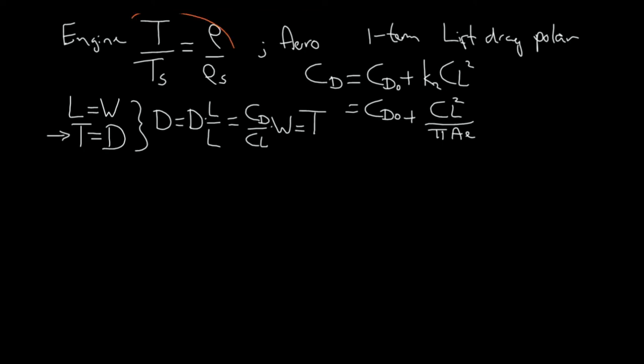And this must equal thrust according to our horizontal equilibrium. Now, I am going to take this equation here and take this thrust and replace it in the equation we already derived. So what this means is that I can also write this as 1 over the thrust level at the stratosphere times CD over CL times the weight equals air density divided by the air density at the stratosphere.